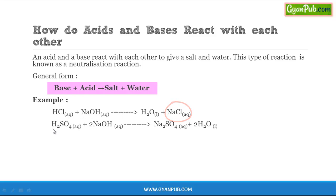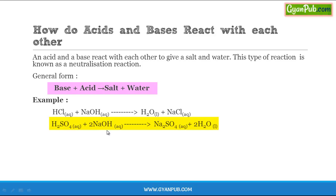Another example of this type of reaction is sulfuric acid when treated with sodium hydroxide. Sodium hydroxide is a base and sulfuric acid is an acid. When these two react with each other, the formation of sodium sulfate salt and water takes place. Here, sodium and sulfate ions combine to form sodium sulfate salt, and H⁺ ions in the sulfuric acid and OH⁻ ions in sodium hydroxide combine to form water.